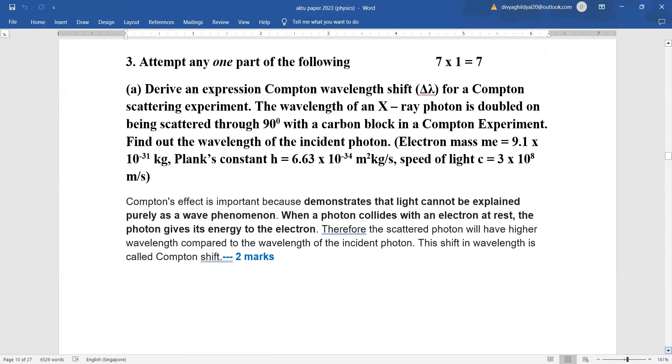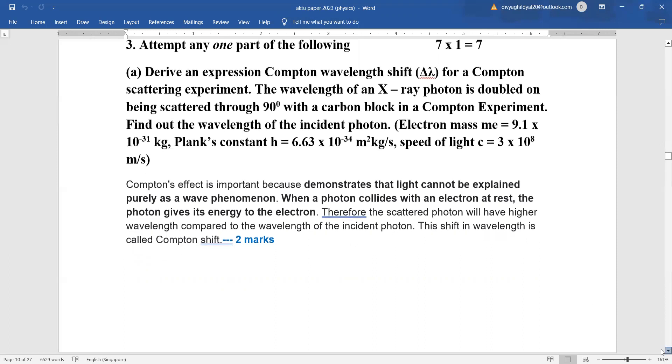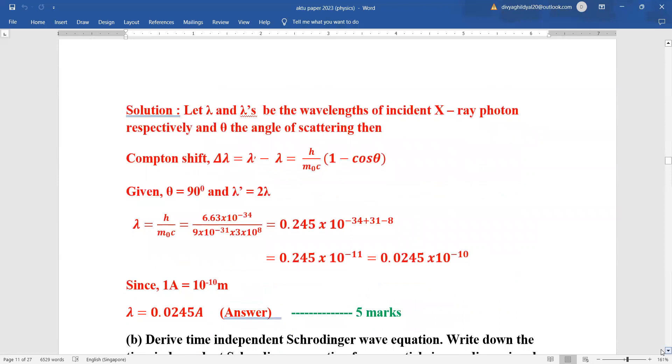Compton effect. Derive an expression for Compton wavelength shift and they have given you a numerical. They will break up the marks: either for the expression they will put it 3 or 3 and a half and for the numerical 3 or 3 and a half. In the question paper 9.1 into 10 to the power of minus 3 is there. It should be minus 31. Compton effect is an important effect because it is demonstrating that light cannot be explained as a pure wave phenomena. It is combining the other form also and a shift in wavelength has been observed.